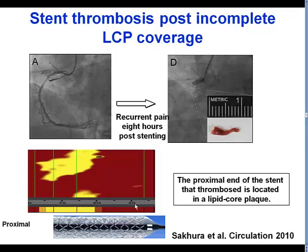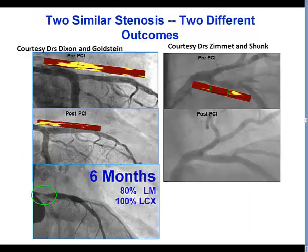Why is that important? This is an example of a lesion in the proximal right coronary artery that was treated with a stent. The patient, eight hours later, developed acute stent thrombosis. Near-infrared spectroscopy was then performed, demonstrating the presence of lipid core plaque even more proximal to the proximal end of the stent, suggesting that possibly the rupture or disruption of the lipid core plaque by the stent might have contributed to the development of acute stent thrombosis.